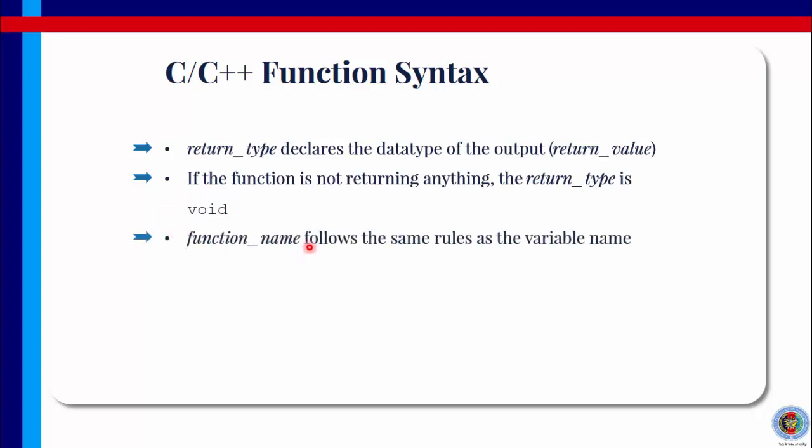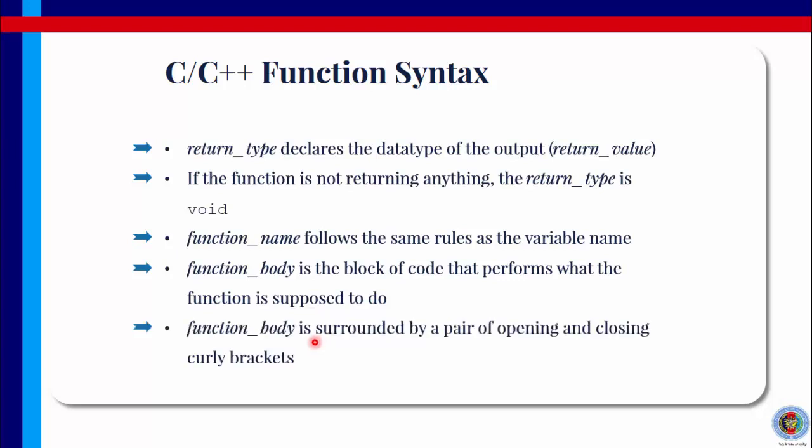Function name is the name of the function. It follows the same rules as the variable name. Function body is the block of code that performs what the function is supposed to do. This is what we call the black box, whose internal operation we don't care. The function body is surrounded by a pair of opening and closing curly brackets, like we said just now.